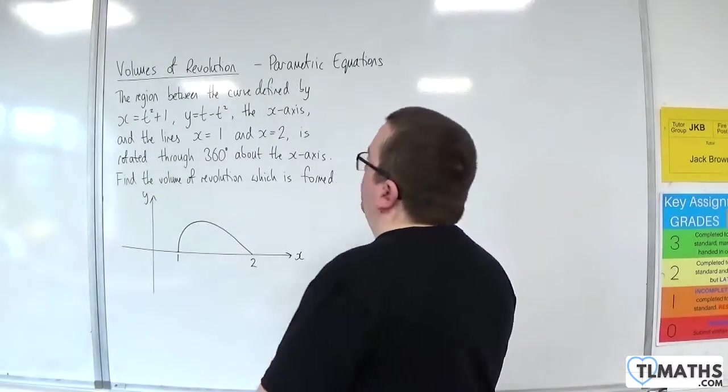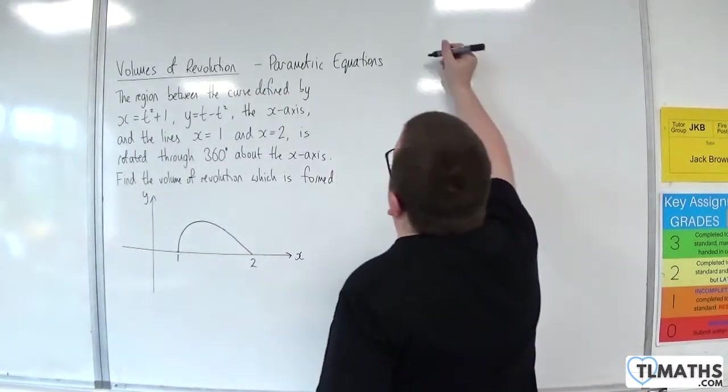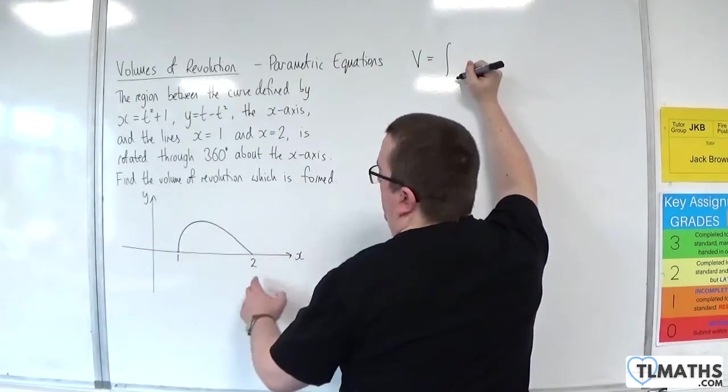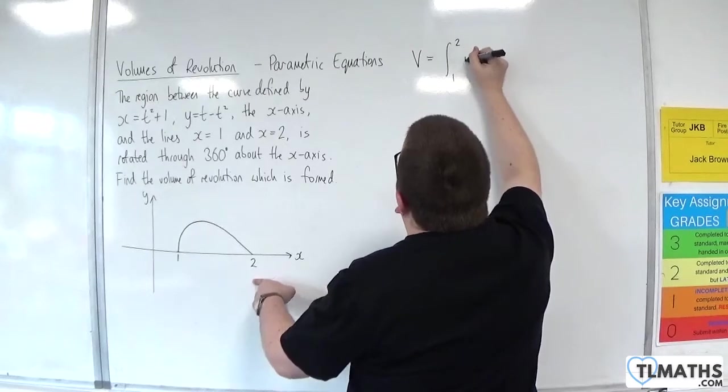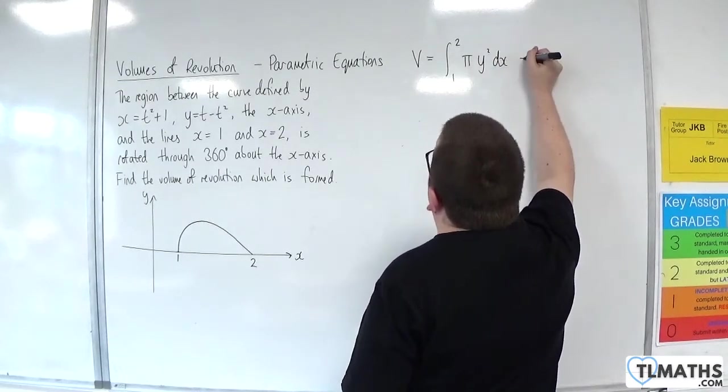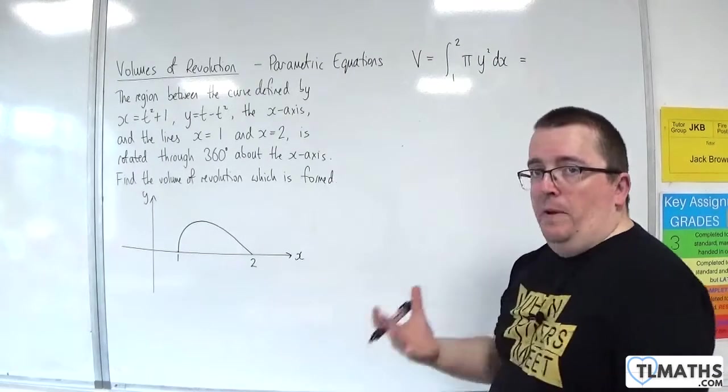So the volume is going to be equal to the integral between 1 and 2 of pi y squared dx. Now, we're going to need to convert this into parametric form.